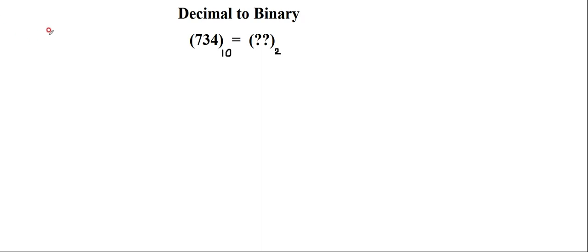Hello everyone, welcome to NG Classes' YouTube channel. In this video lecture we will consider the conversion from decimal to binary. The given number is 734, expressed in decimal. The task is to convert this number into its equivalent binary representation. So let me write the number 734 — this is the number in decimal. What is the task? I need to divide this number successively by 2 and just note down the remainder.